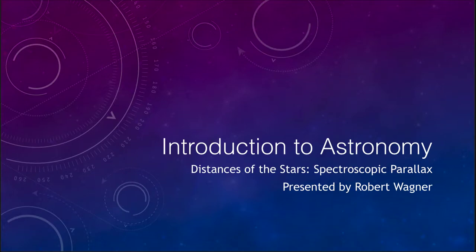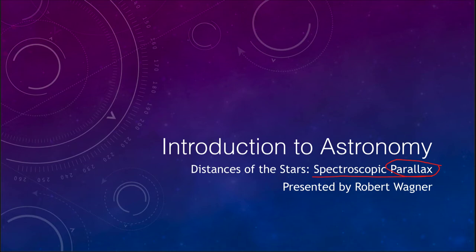Greetings and welcome to the introduction to astronomy. In this video we are going to look at another way of determining distances — what is called spectroscopic parallax. Now, even though it has the word parallax in its name, it has nothing to do with parallax as discussed in another video. Parallax was measuring the apparent shift of a star compared to more distant stars. Spectroscopic parallax means it is a spectroscopic way, using the spectra of stars, to determine distances. Let's take a look at how this works and why it is so important.